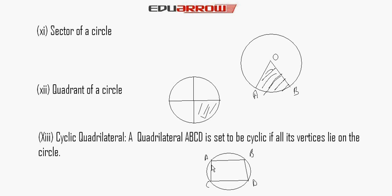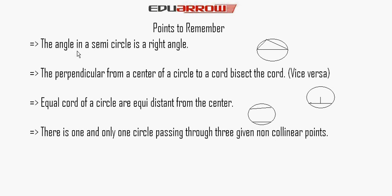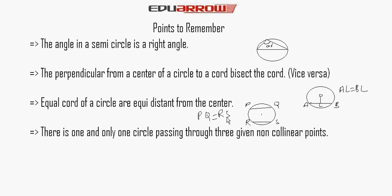The angle in a semicircle is always a right angle — 90 degrees. The perpendicular from the center of a circle to a chord bisects the chord. Line OL is perpendicular to chord AB, so AL is equal to LB. Equal chords of a circle are equidistant from the center — if chord PQ equals chord RS, they are always equidistant from the center. There is one and only one circle passing through any three given non-collinear points.